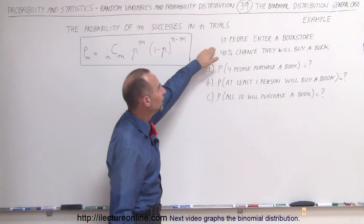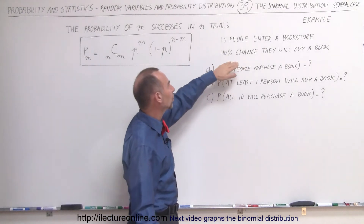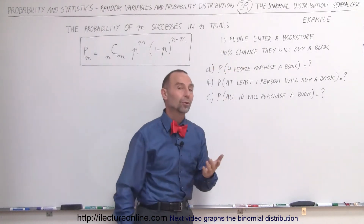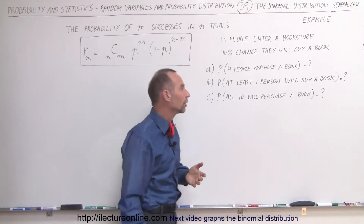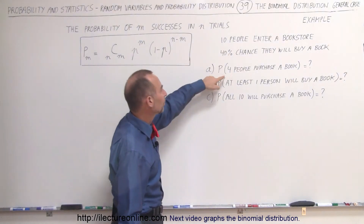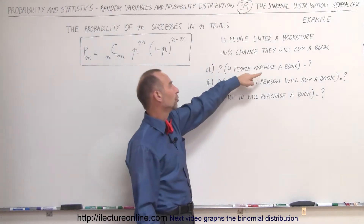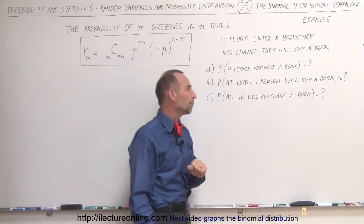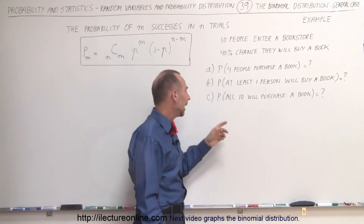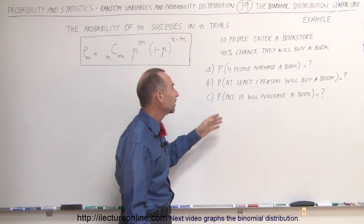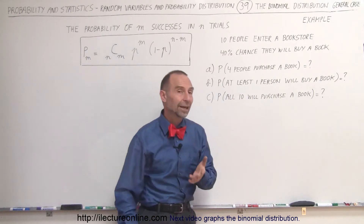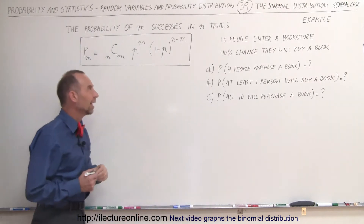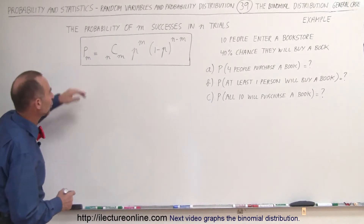We have 10 people entering a bookstore and there's a 40% chance that any single person will buy a book. What is the probability that four people will purchase a book? What is the probability that at least one person will purchase the book? And what's the probability that all 10 purchase a book? Let's figure that out using the general equation.